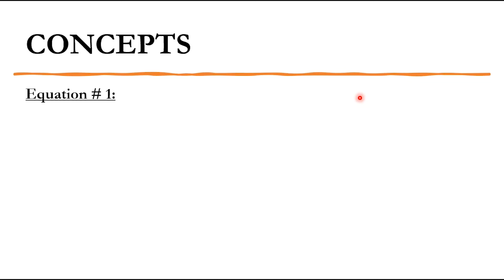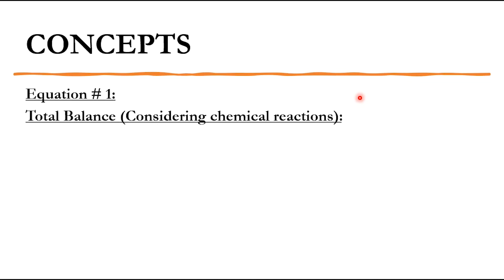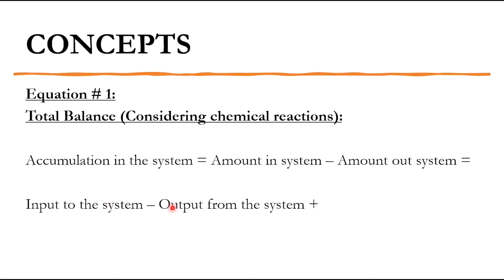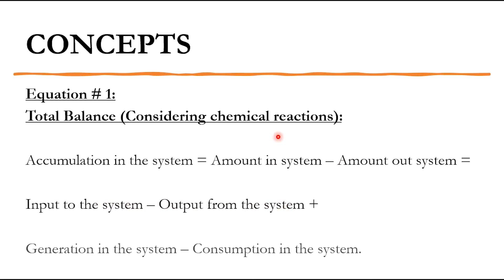Talking about the concepts, we will see two equations. Number one is the total balance considering chemical reactions. The equation is: accumulation in the system is equal to amount in the system minus amount out of the system. If amount in minus amount out equals zero, there is no accumulation. For example, if amount in is 100 kg/hr and amount out is 70 kg/hr, then 30 kg/hr of accumulation will be in the system.